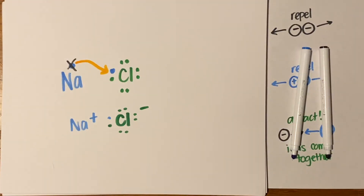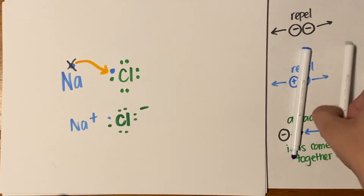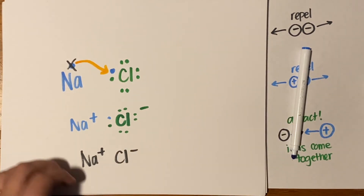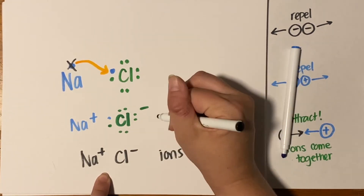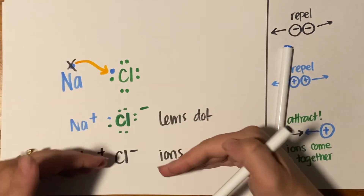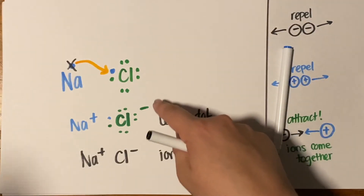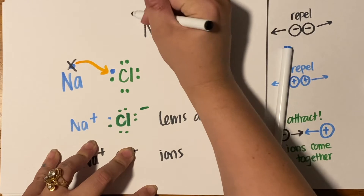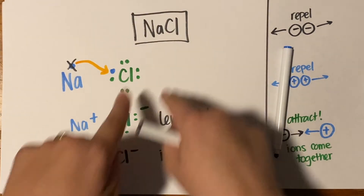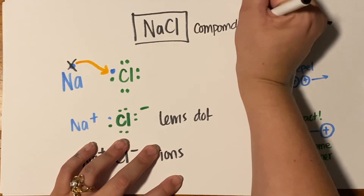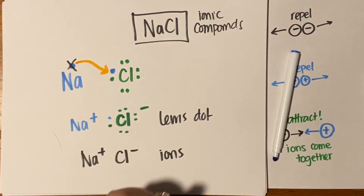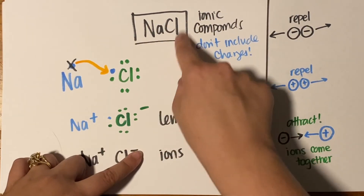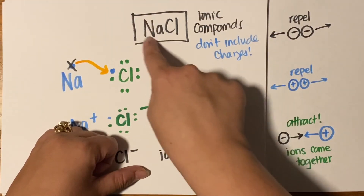If you're just drawing the ions, you'd have Na+ attracted to Cl−. And if you're drawing the actual compound, once you make an ionic compound you don't include the plus and minus charges anymore — you're just showing that this cation is attracted to that anion. So we have: the Bohr model, the Lewis dot transfer drawing, the ion model, and finally the actual chemical compound formula where charges are omitted.